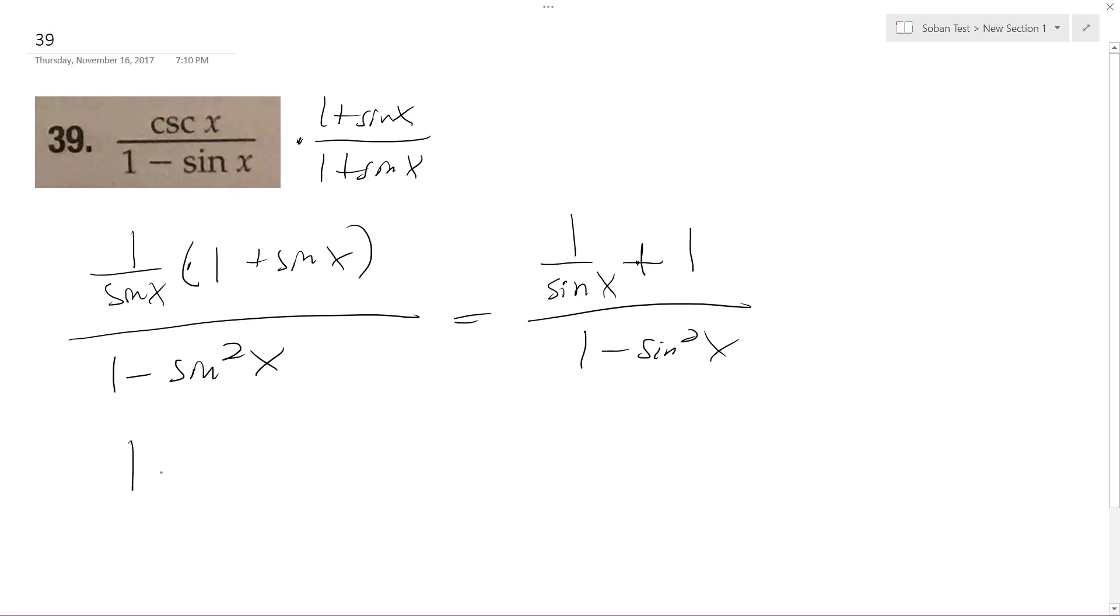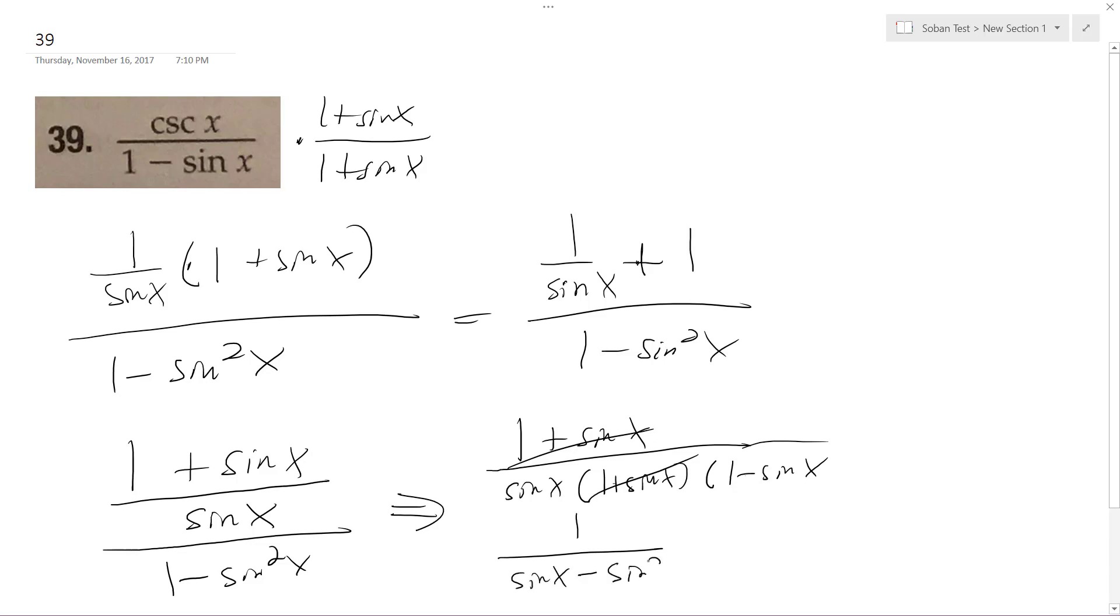So I get 1 plus sine of x over sine of x over 1 minus sine squared of x. Furthermore, this is going to become 1 plus sine of x over sine of x, 1 plus sine of x, which cancels out. I get 1 minus sine of x. So we get 1 over sine of x minus sine squared of x.